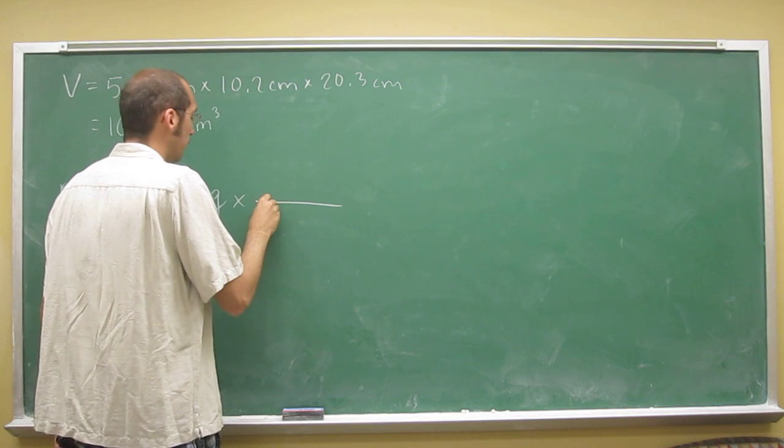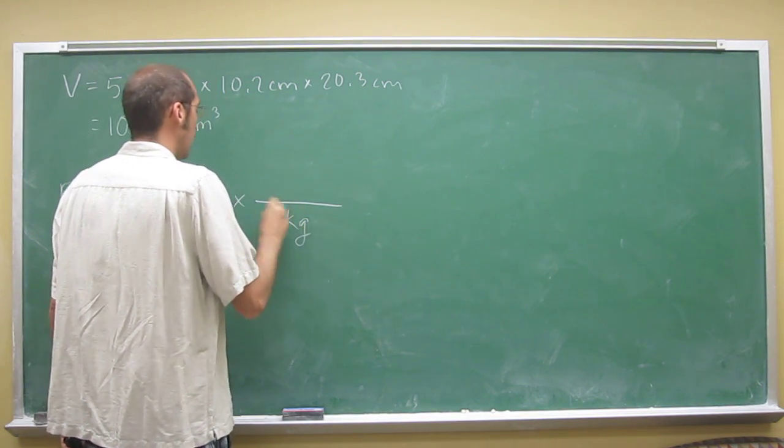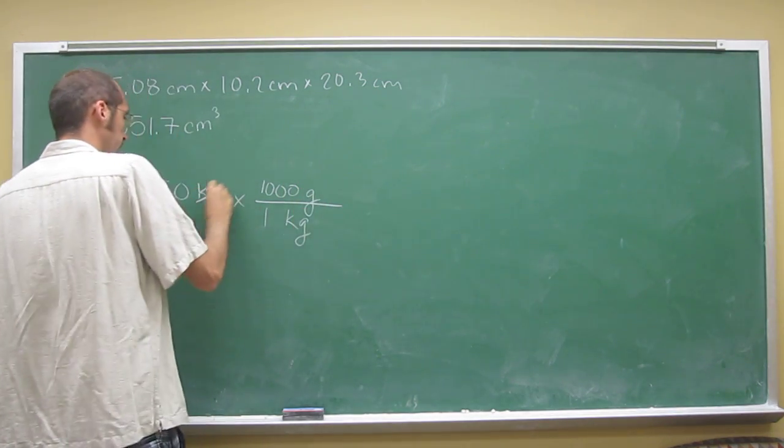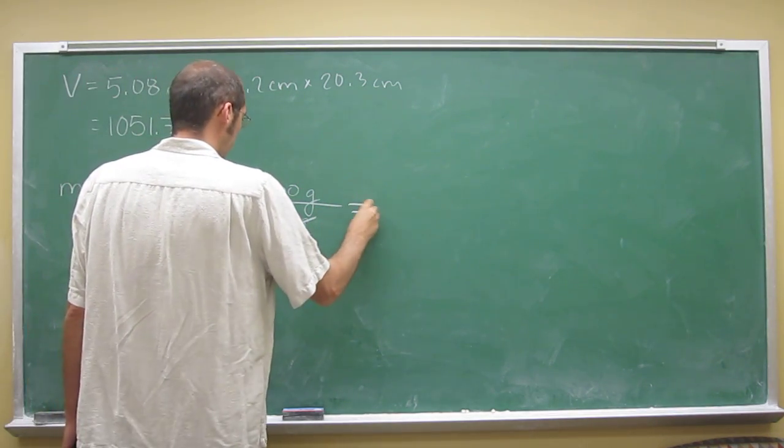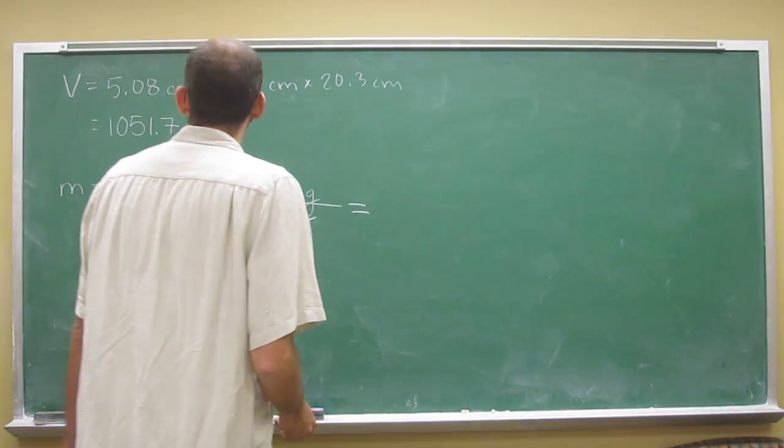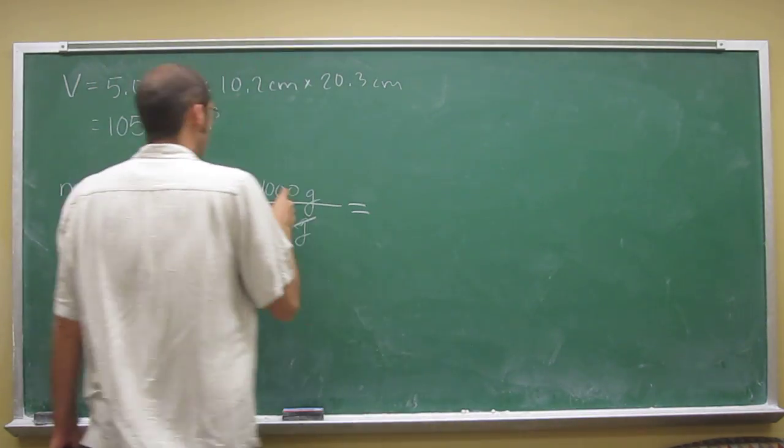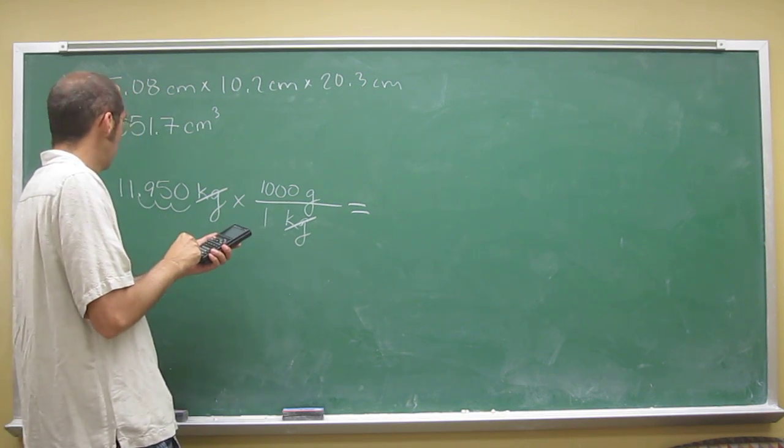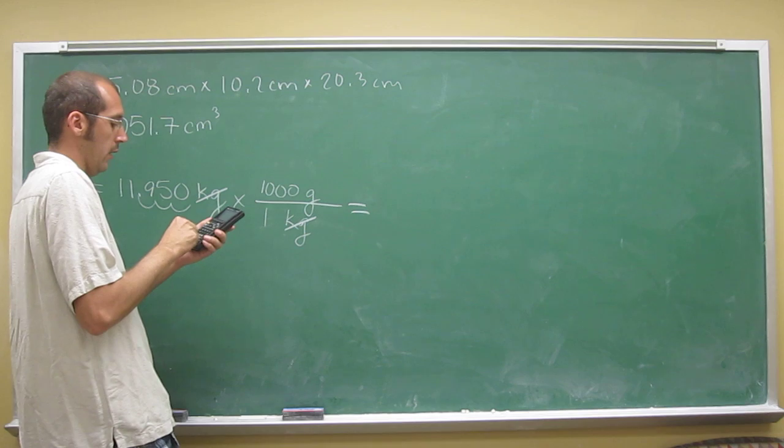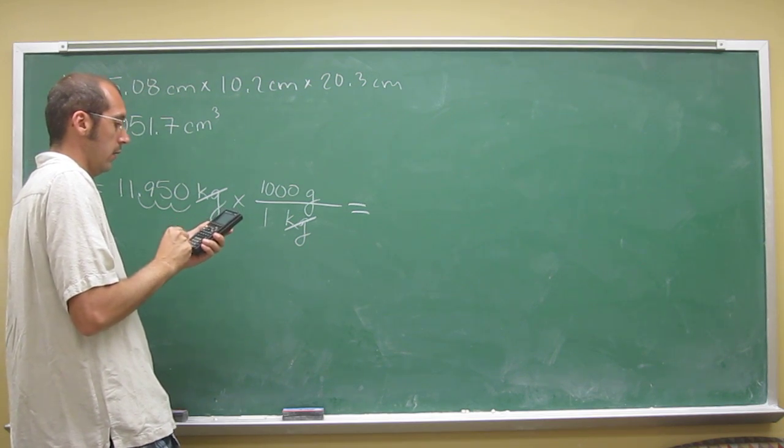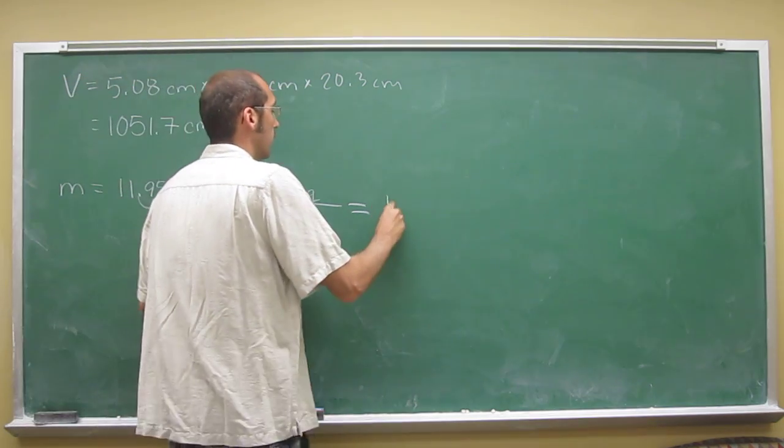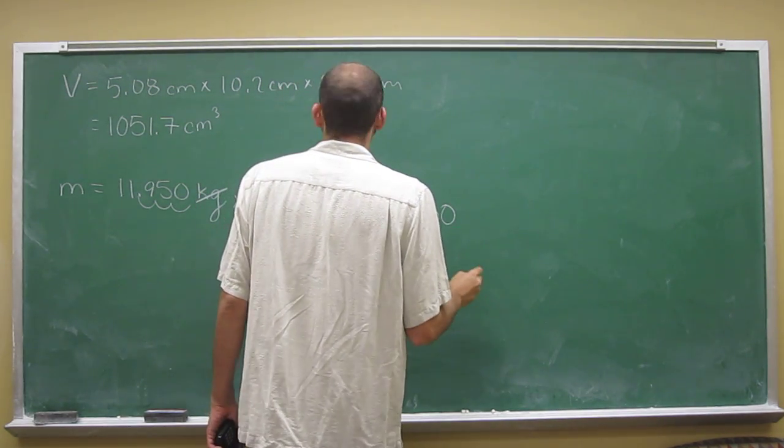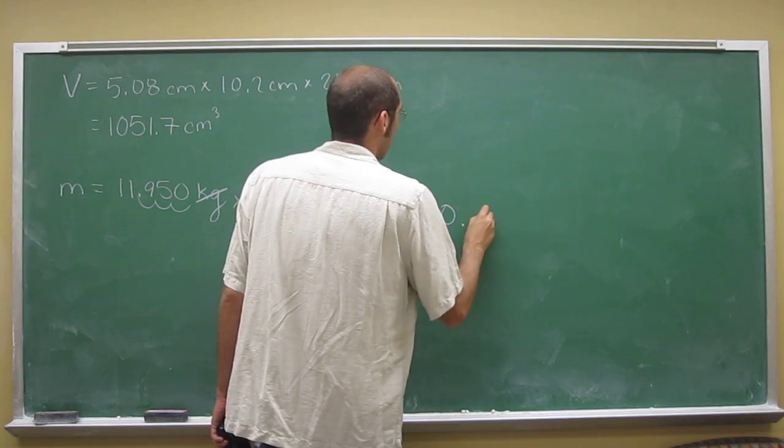So what is it? One kilogram equals 1,000 grams. That'll have kilograms cancel. And so three zeros. So one, two, three. If you can't do that, just do it on your calculator: 11.950 times 1,000. That's going to give you 11,950 grams.